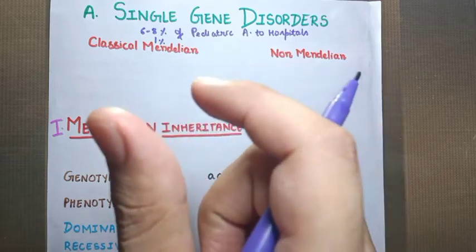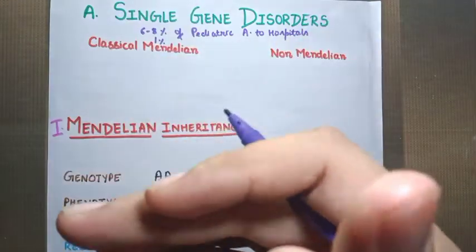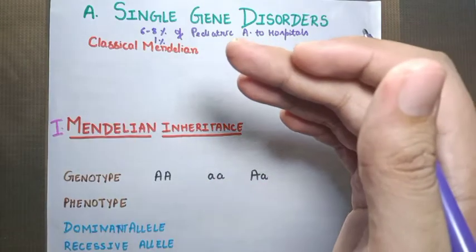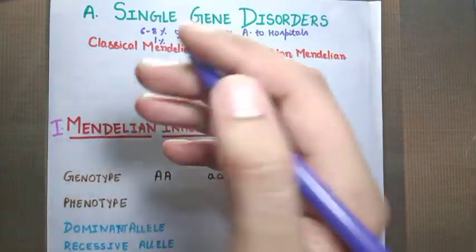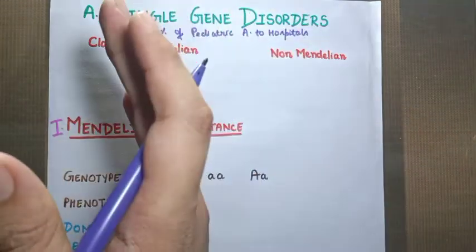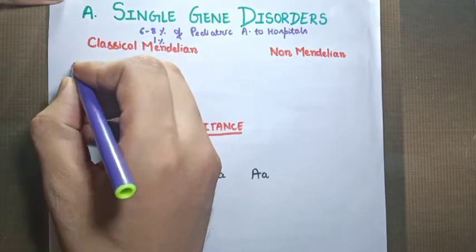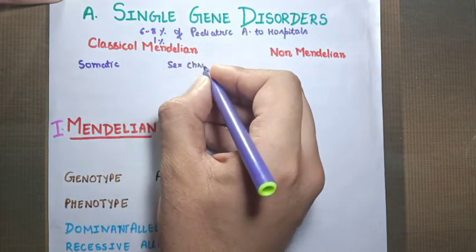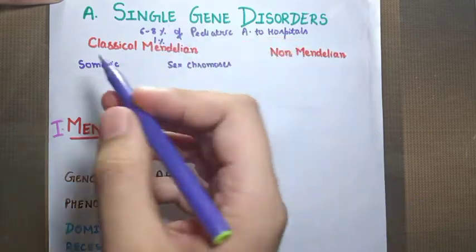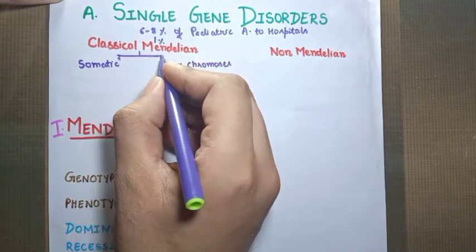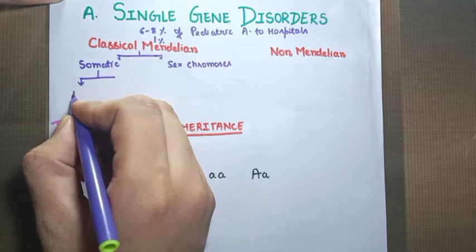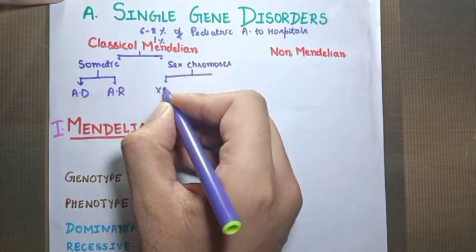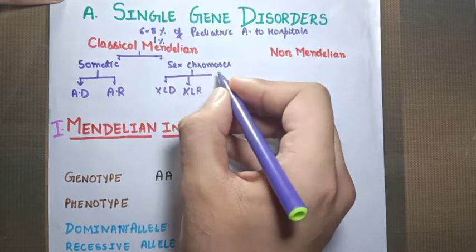According to Mendel, two alleles are present which signify a character. When both alleles are present, the one which expresses itself in heterozygous condition is called dominant, while the other is called recessive. We have divided chromosomes into two categories: somatic or autosomal chromosomes, and sex chromosomes. Classical Mendelian inheritance of sex chromosomes and autosomes differs. In each category we have autosomal dominant and autosomal recessive. In sex chromosomes, we have X-linked dominant, X-linked recessive, and Y-linked.